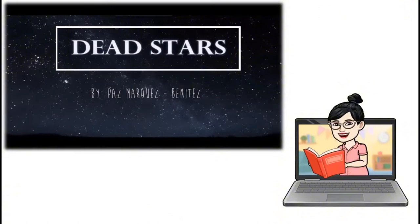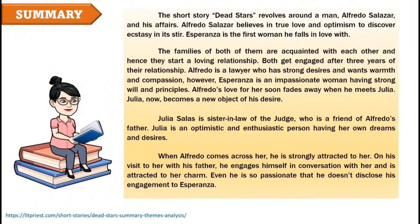The short story Dead Stars revolves around a man, Alfredo Salazar, and his affairs. Alfredo Salazar believes in true love and optimism to discover ecstasy in its fullness. Esperanza is the first woman he falls in love with. The families of both of them are acquainted with each other, and hence they start a loving relationship. Both get engaged after three years. Alfredo is a lawyer who has strong desires and wants warmth and compassion. However, Esperanza is an impassionate woman having strong will and principles. Alfredo's love for her soon fades away when he meets Julia.